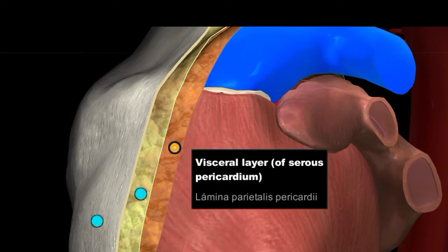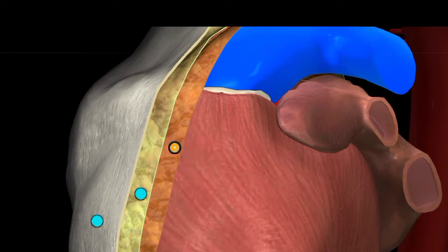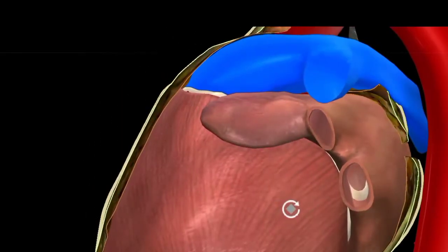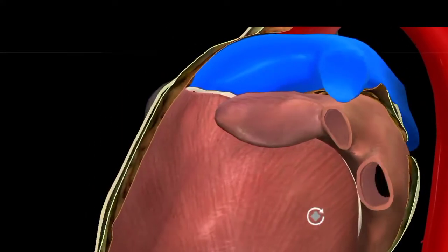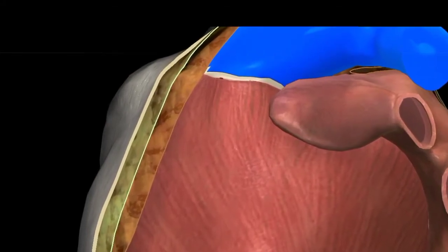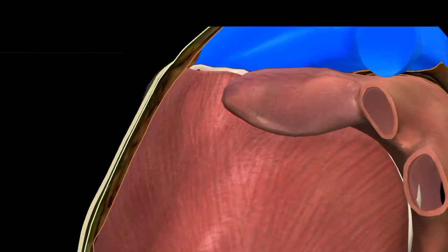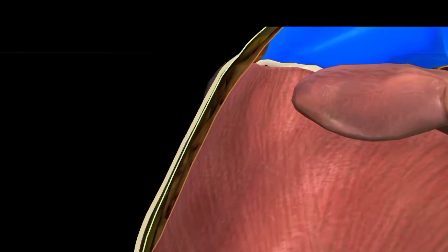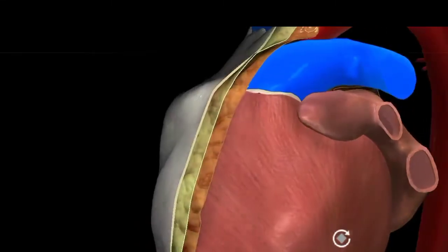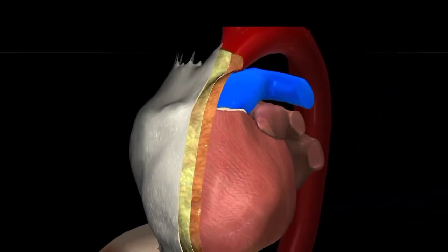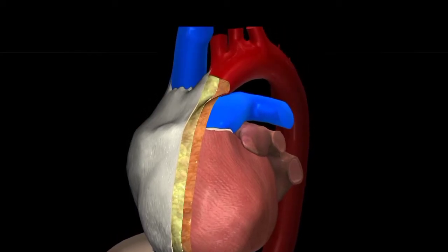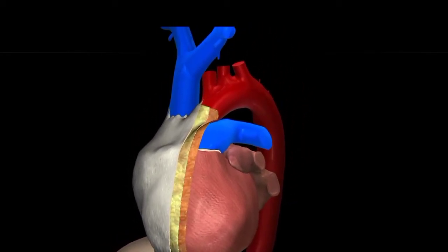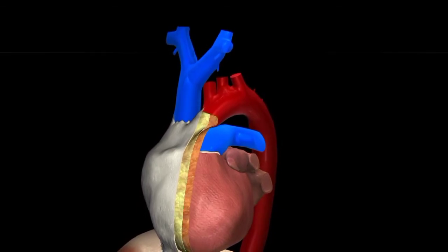The visceral pericardium is also called epicardium. From an MCQ point of view: between the parietal and visceral pericardium there is the pericardial cavity, and in this cavity pericardial fluid is present, approximately 15 millilitres. So that was all about the pericardium.